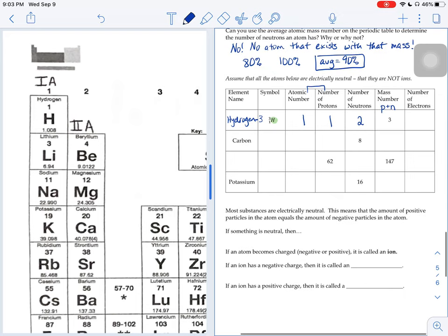For my electrons, it tells us here, assume that all these atoms below are electrically neutral, meaning that our positively charged protons have to match our negatively charged electrons to make an overall neutral atom. So if this guy has one proton, it also has to have one electron to balance out the charge.